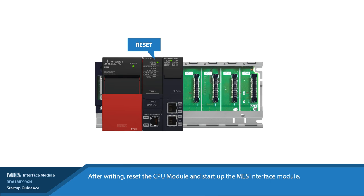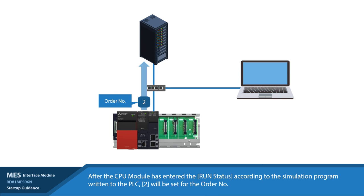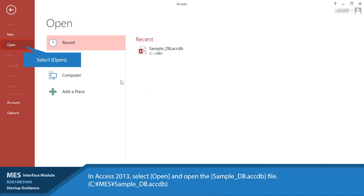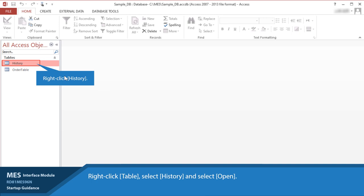After resetting, set the MES Module to Run Status. Input the order code and read the manufacturing quantity from the database. After the CPU Module has entered the run status according to the simulation program written to the PLC, 2 will be set for the order number. Finally, the results that were written to the database table will be checked. In Access 2013, select Open and then open the sample-db.accdb file. Right-click Table, select History, and select Open. The results inserted into the History table by the MES Interface Module can be checked.